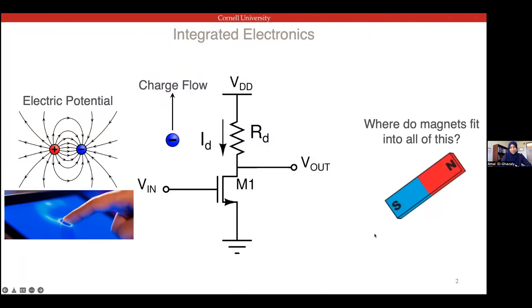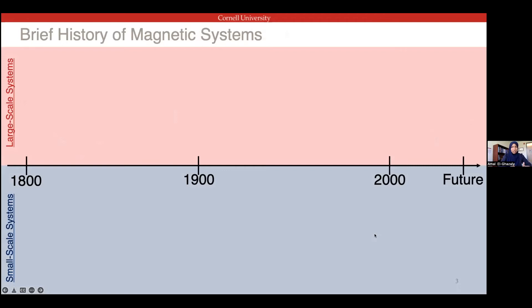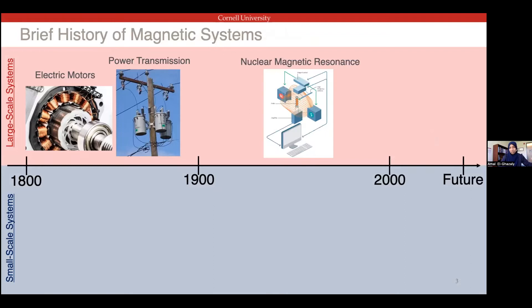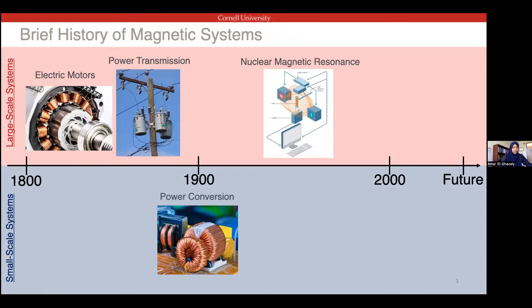Before I jump into that, I want to give a bit of magnetic history to show how much of a challenge it is to really get magnetics to the nanoscale and into integrated electronics. Back at the beginning of magnetic systems, we were working with very large-scale magnetics — electric motors in the 1800s, power transmission, very large bulky systems, even nuclear magnetic resonance. As magnetic systems got smaller, we started seeing AC/DC converters, but the magnetic components were still large bulky inductors and transformers on printed circuit boards, not actually integrated on chip.